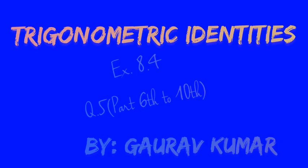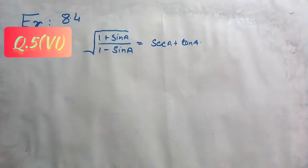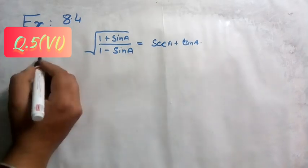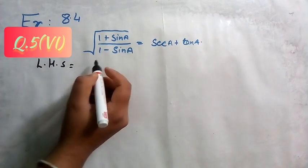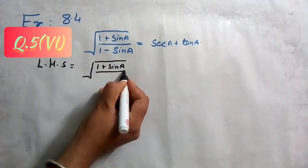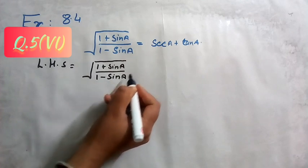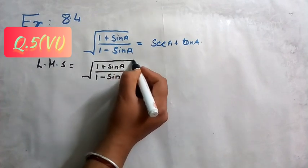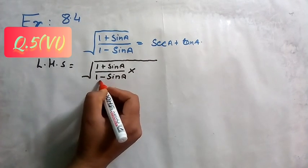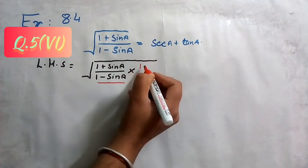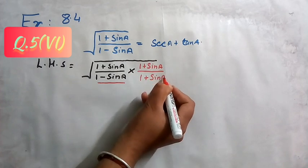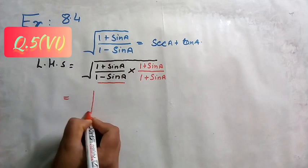Namaste everyone. Let us discuss question number five, part six onwards. Part six is: the square root of (1 + sinA) / (1 - sinA) equals secant A plus tangent A. Let us take the left hand side first, which is the square root of (1 + sinA) / (1 - sinA). We need to remove this square root by rationalization. Change the sign of the denominator and multiply and divide by it — the denominator is (1 - sinA), so multiply and divide by (1 + sinA).